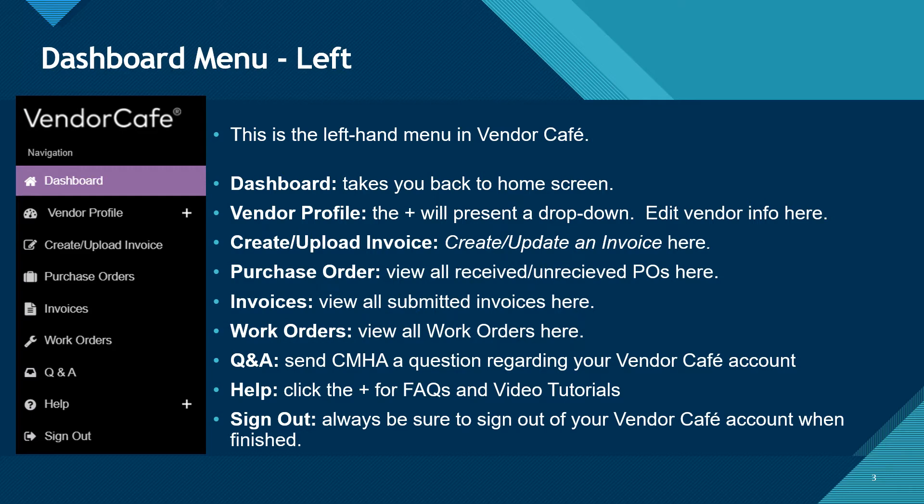The next button is the Vendor Profile button. If you click the plus sign to the right of the Vendor Profile button, it will create a drop-down with different options. You will recognize these options as those that you completed in the Vendor Cafe registration.